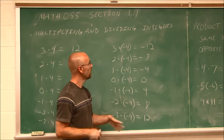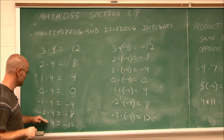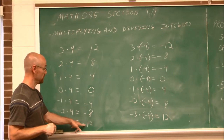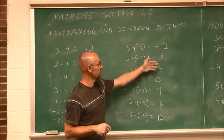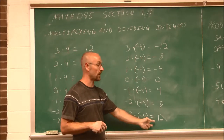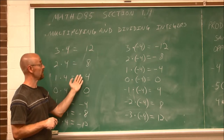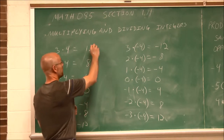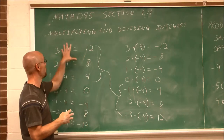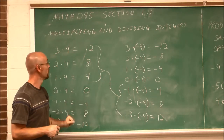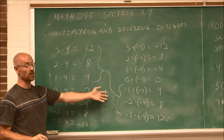3 times 4 is 12. Let's roll back for a moment and notice: when we had one negative, we got a negative answer. One negative gave a negative answer. When we had two negatives, we got a positive answer. When we had two positives, we got a positive answer. If the signs are the same, we're going to get a positive value.